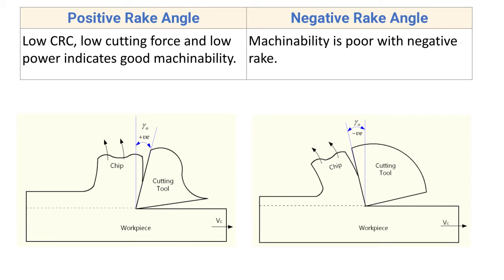Next difference: low CRC, low cutting force, and low power indicate good machinability with positive rake angle. Machinability is the ability of a material to be machined with a particular cutting tool. With positive rake angle, the tool tip is very sharp, requiring very less force to remove the material. This results in low chip reduction coefficient, low cutting forces, low power, and ultimately good machinability.